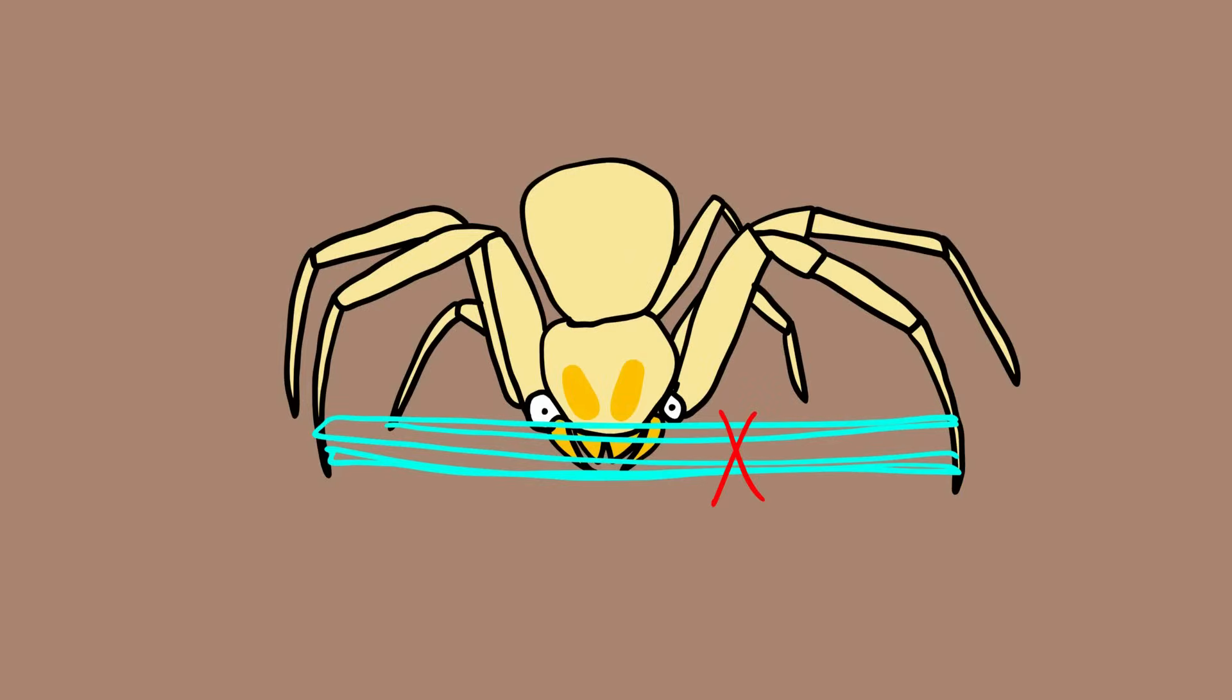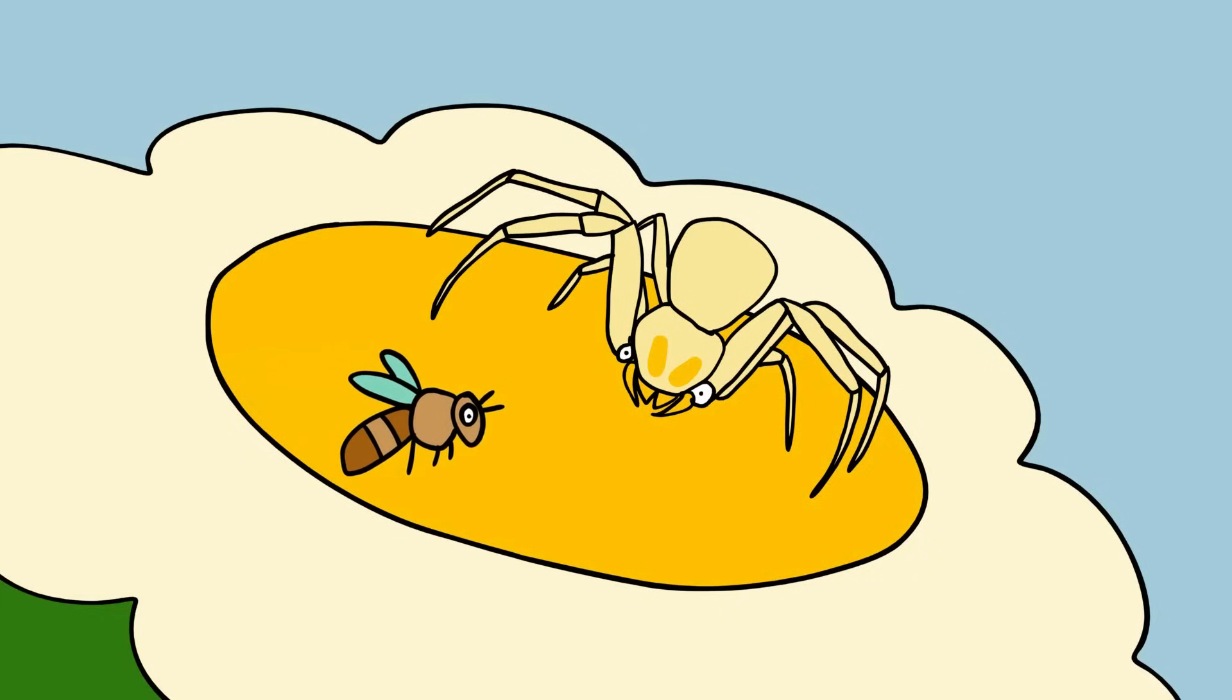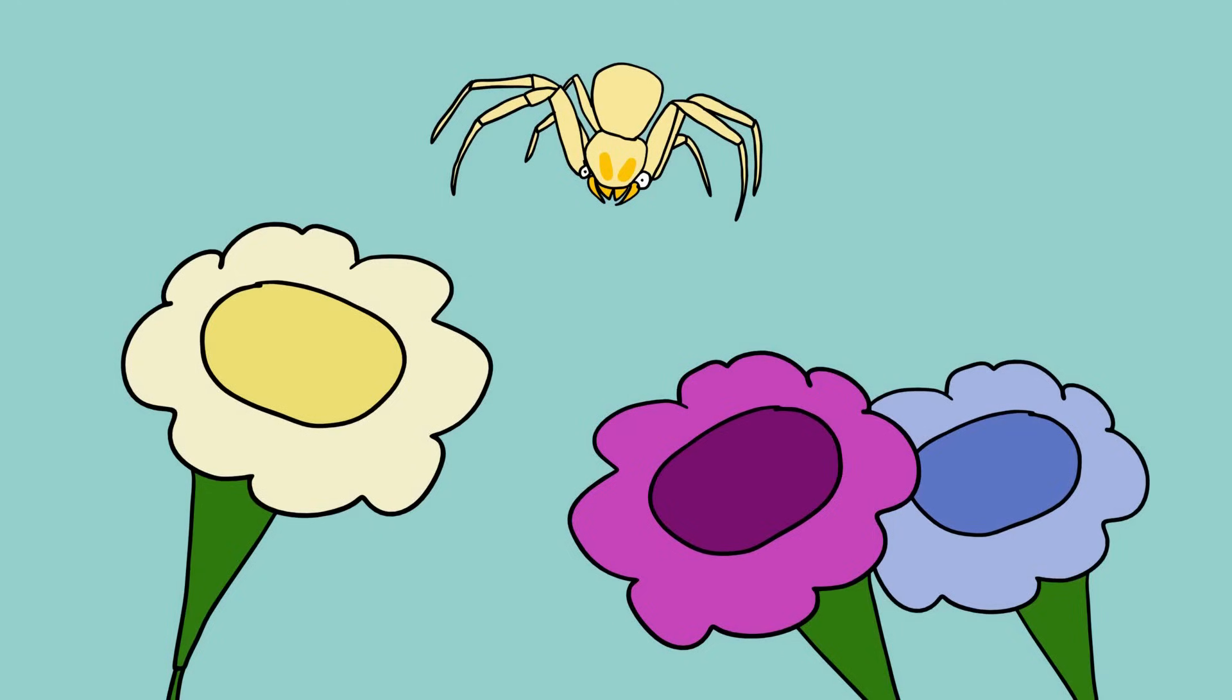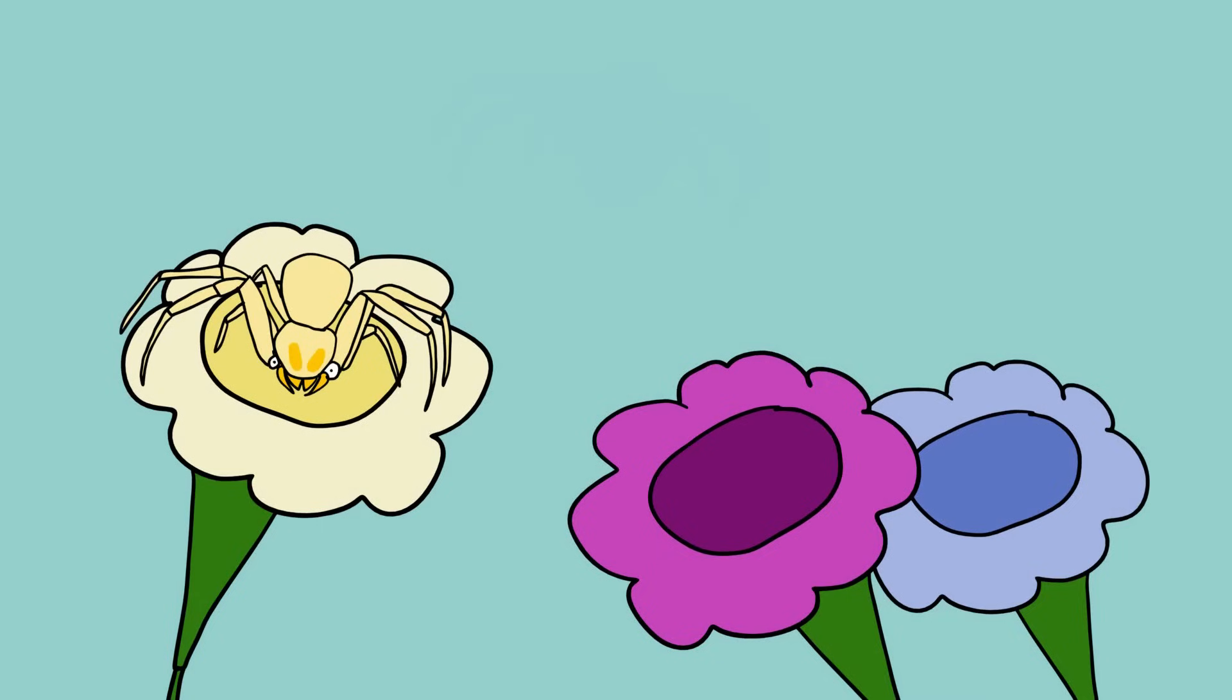Rather than using a web to trap prey, this spider sits atop flowers and pounces on anything that comes too close. Since the arachnids themselves are usually either white or yellow, they tend to stick with plants of those colors.